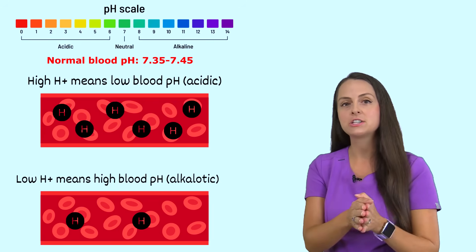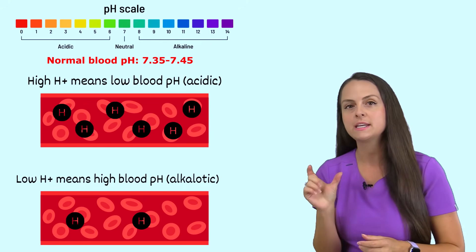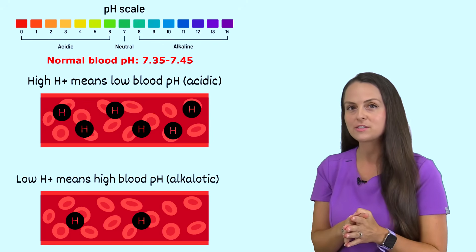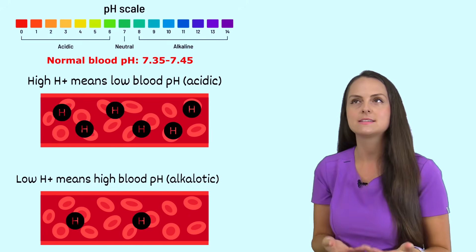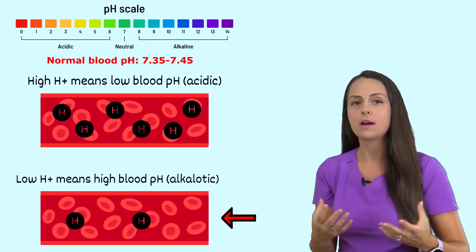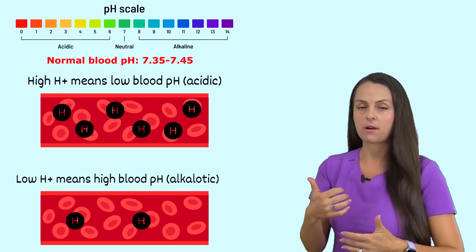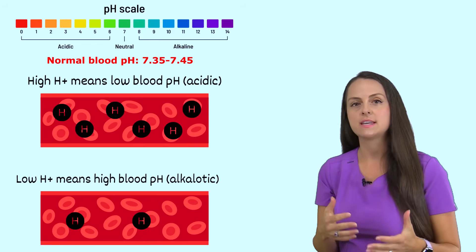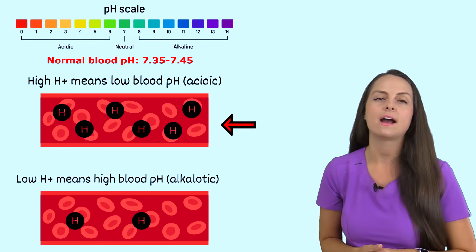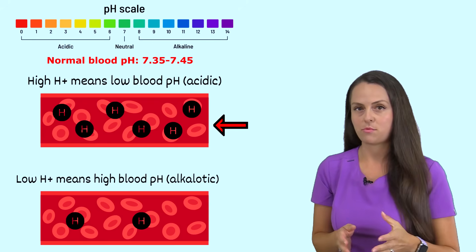A normal blood pH is 7.35 to 7.45 — extremely narrow. Whenever you have too many hydrogen ions in the body, it's going to make your blood pH less than 7.35. If we don't have a lot of hydrogen ions, we're going to increase our blood pH — it'll be greater than 7.45. But here in acidosis, we have way too many hydrogen ions on board, so we have a blood pH of less than 7.35.